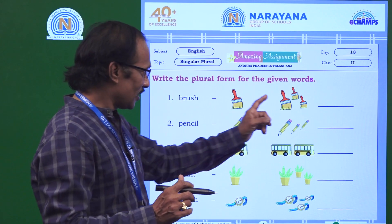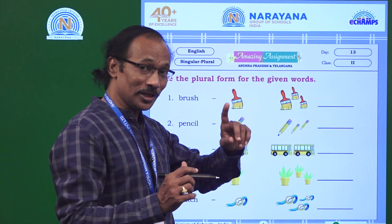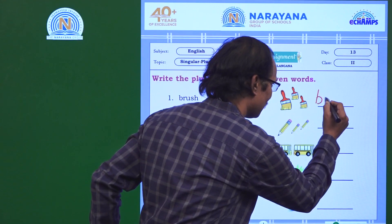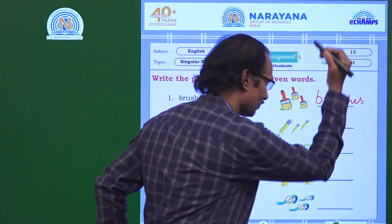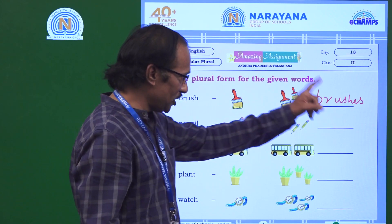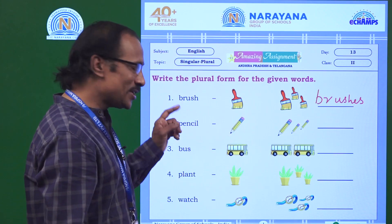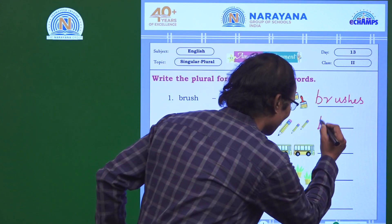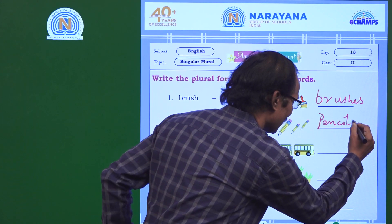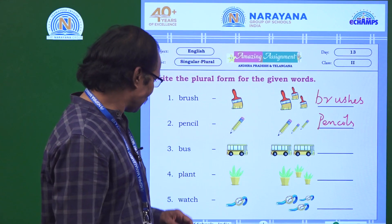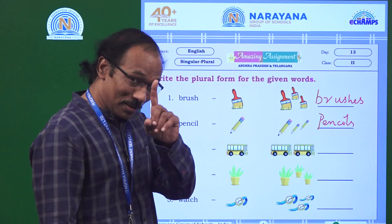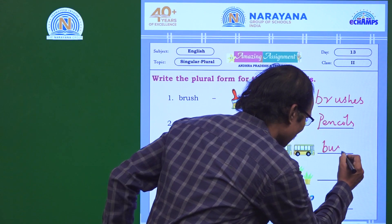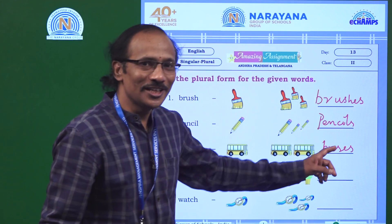Let us see the first word: brush. There are three here, so it is 'brushes' — add 'es'. Brush is singular, brushes is plural. Pencil: when it is one in number, add 's' to make it more — pencils. Pencils.